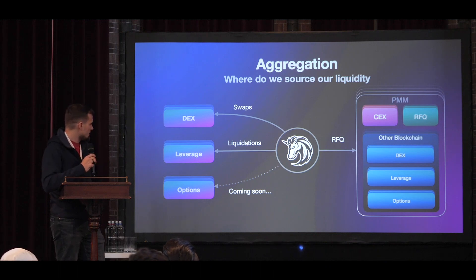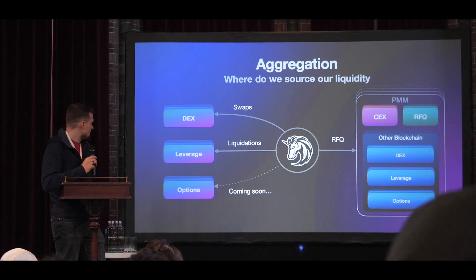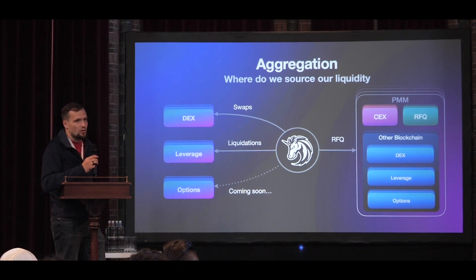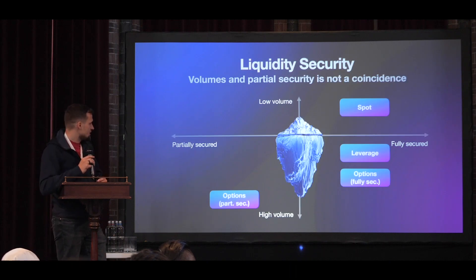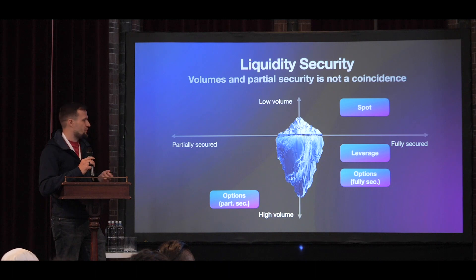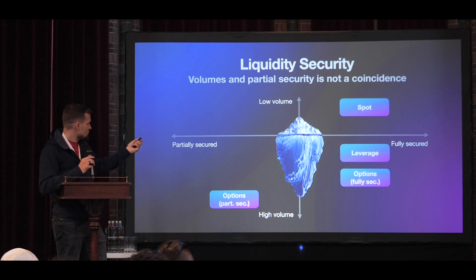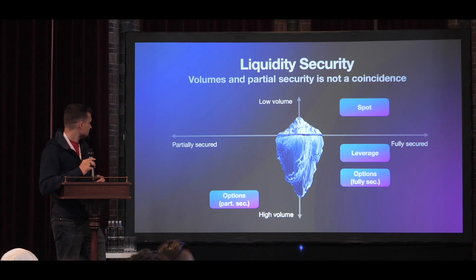It's not a simple question, because there are a lot of different blockchain-based systems for options and other derivatives. Everyone is thinking about it and everyone is working on it. It's the biggest missing piece of DeFi right now, because as you saw on the chart, options — especially partially secured ones — usually have the highest volumes on traditional markets. I tried to demonstrate this with a huge iceberg.